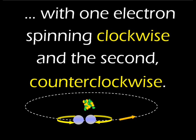It is theorized that two electrons can be found in each shaped orbit. In other words, two electrons in each s-shaped orbit, two in each p-shaped orbit, and so on. One of these electrons is thought to be spinning clockwise while the other spins counterclockwise.